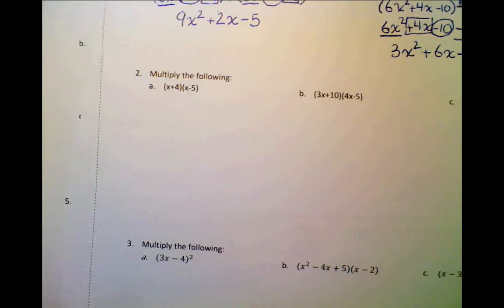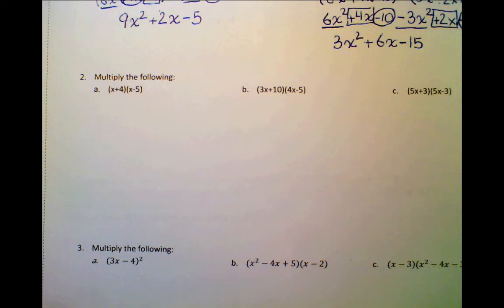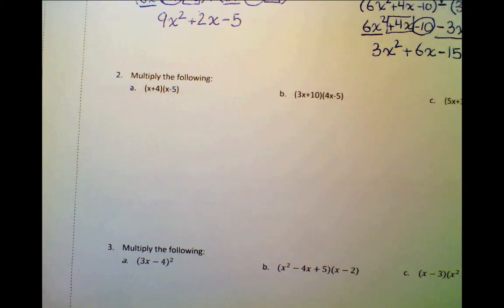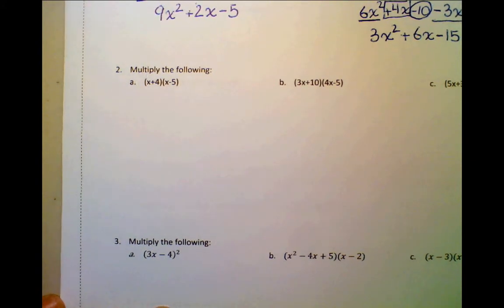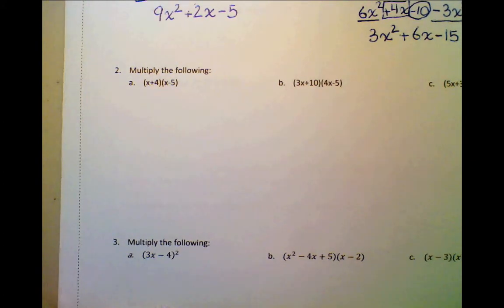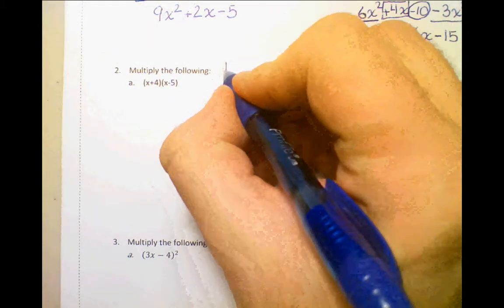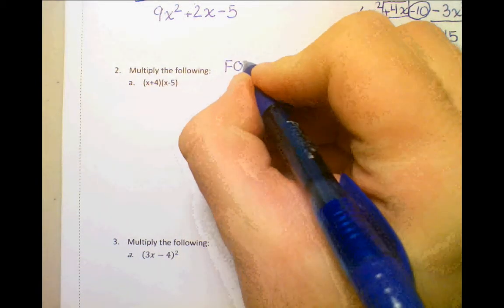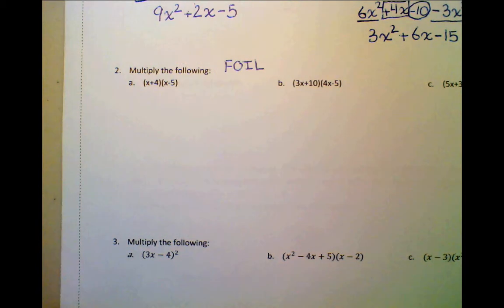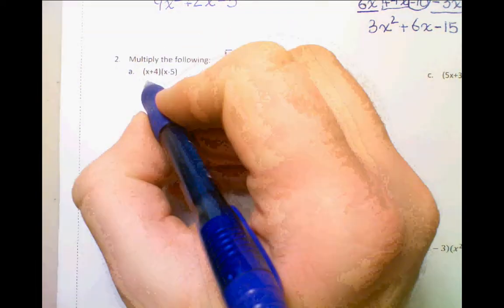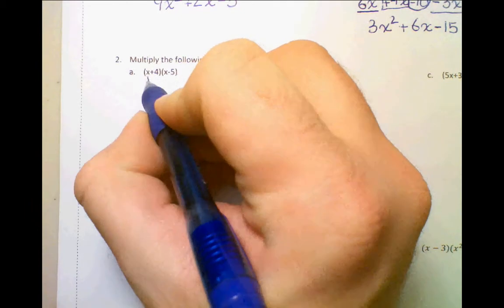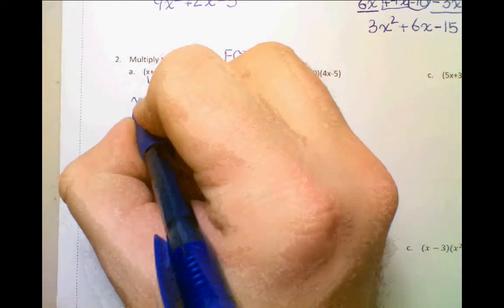Now let's go on to the second part, which is multiplying just two binomials together. What's essential is that you remember our little trick — FOIL, like aluminum foil. You can use FOIL only when you're multiplying two binomials together. So we're going to do the First: x times x, which gives us x squared.